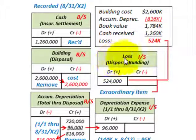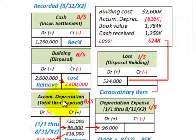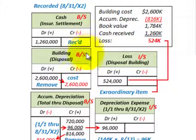On the income statement we recognize this loss by debiting our loss account for $524,000. To summarize, with this involuntary conversion we recognized the cash payment, removed the building and accumulated depreciation from the books, recognized depreciation expense for the partial year, and recorded the $524,000 loss. This is a typical example of how you handle an involuntary conversion.